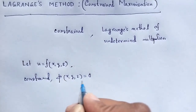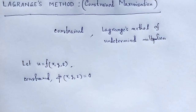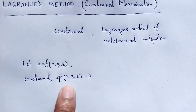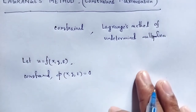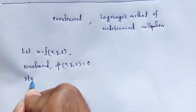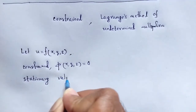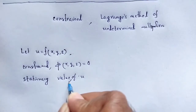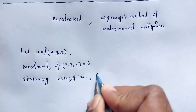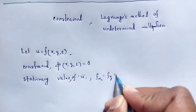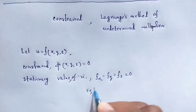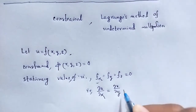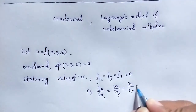That is the function, and φ(x, y, z) = 0 is the constraint — meaning the condition or relation made between the variables. For the stationary value of u, we require that del u/del x = 0, del u/del y = 0, and del u/del z = 0.